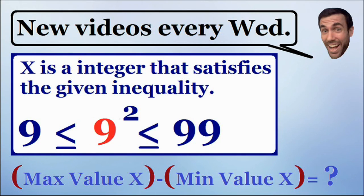9 squared is 81, which is less than 99, and 10 is too big. 10 squared is equal to 100, which is greater than 99. So the maximum value of x is equal to 9.